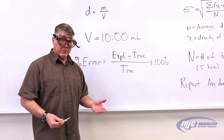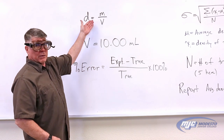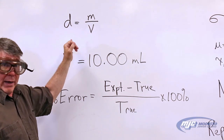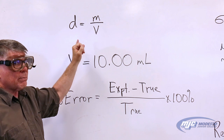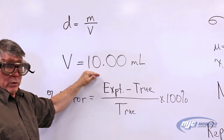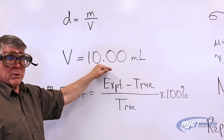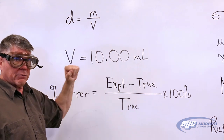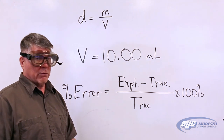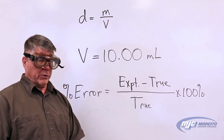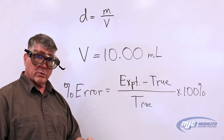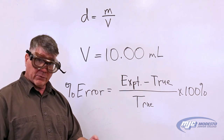That will allow you to calculate the density because we know that density is mass over volume. You'll measure the mass five different times, and you'll see it's not going to be exactly the same each time. The volume each time will be 10.00 milliliters because we will use a volumetric pipette. Those are the only measurements to make for the first part. It's really simple, and what you're going to do with those measurements is determine how accurate and how precise you are.